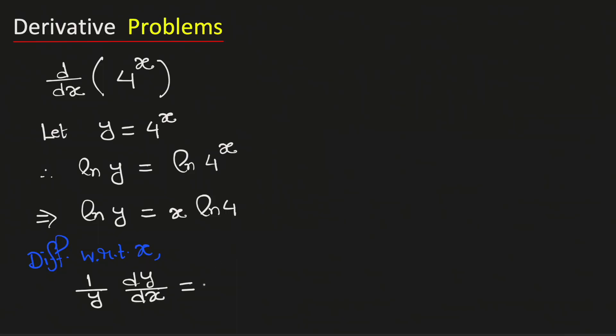As ln 4 is a constant, we write ln 4 and take the derivative of x, which is 1.